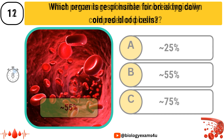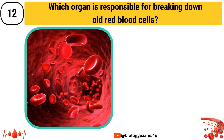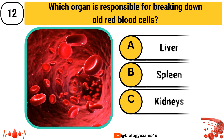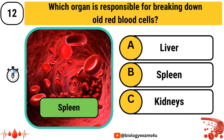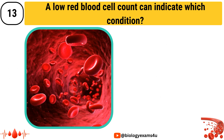Which organ is responsible for breaking down old red blood cells? Option A: Liver, Option B: Spleen, Option C: Kidneys. The answer is Spleen.